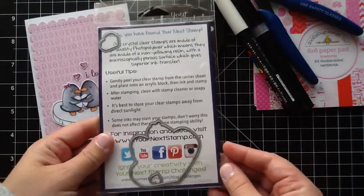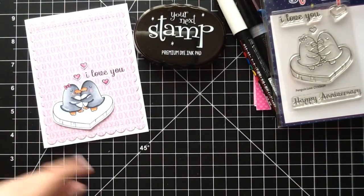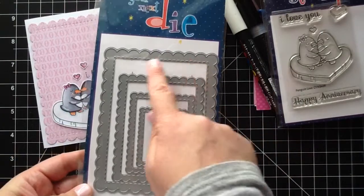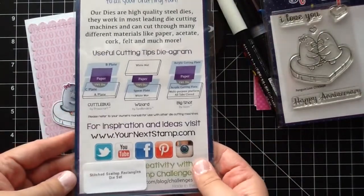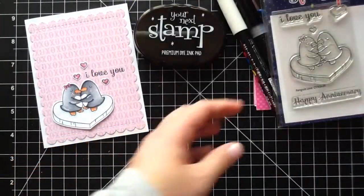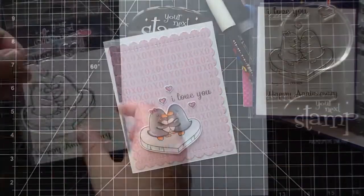I also used the coordinating dies that you can purchase separately and it also cut out those little hearts for me. Then I used this die, the largest size. This is the Stitch Scalloped Rectangles die set and I love this one. I've used it for so many projects.